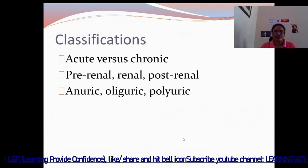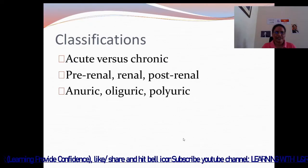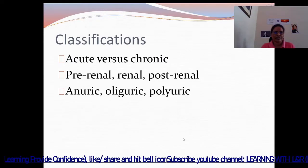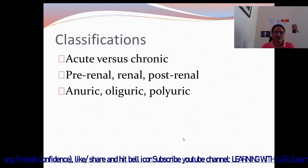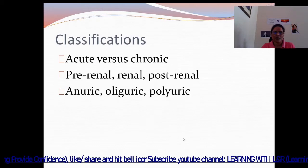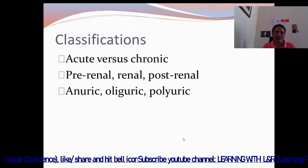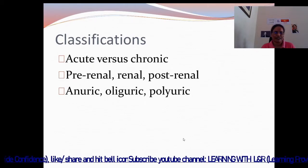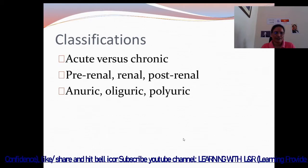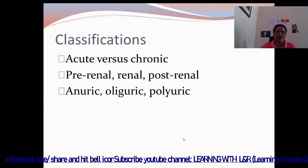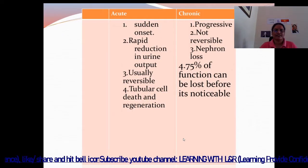Classification: acute versus chronic, pre-renal, renal, post-renal, anuric, oliguric, and polyuric. Anuric means absence of urine; oliguria means a low amount of urine; polyuria means more amount of urine.